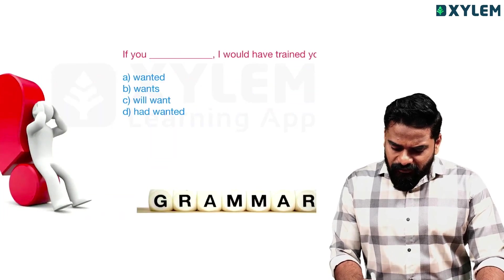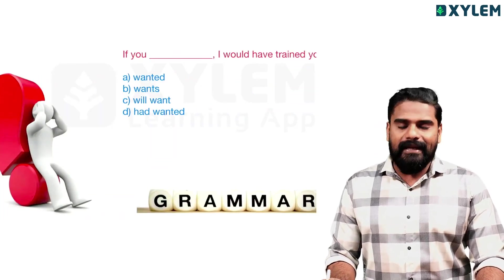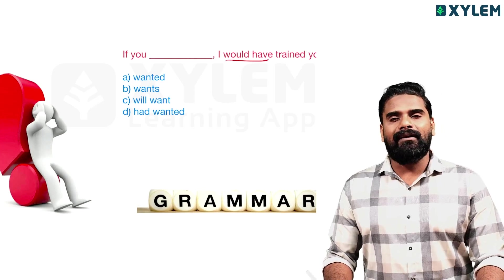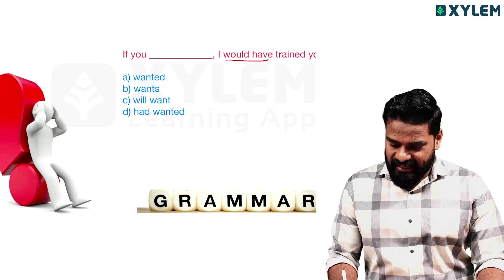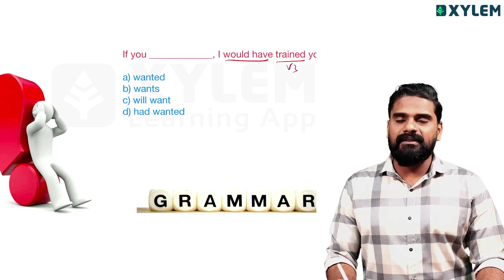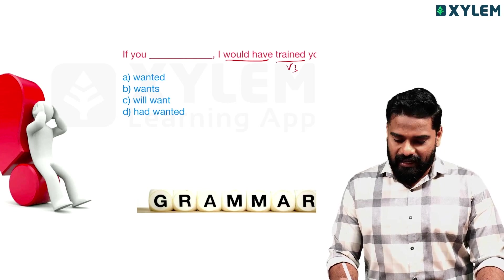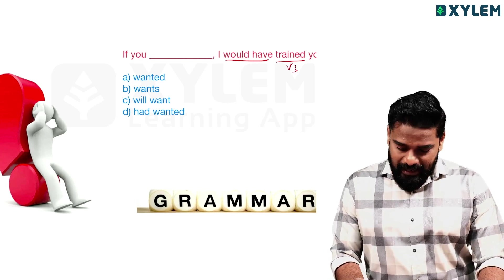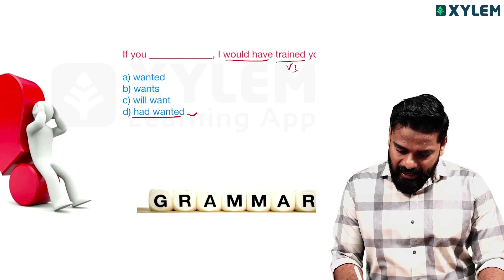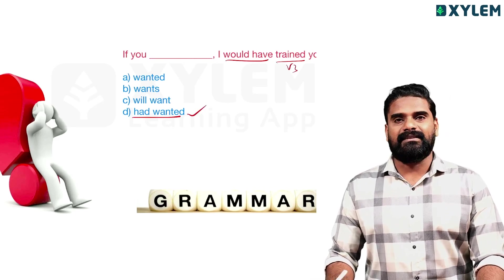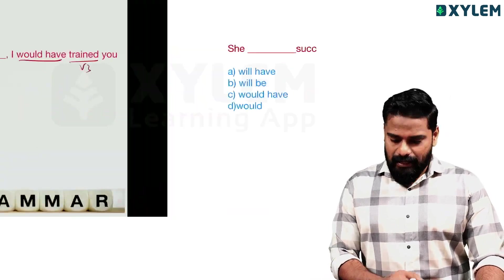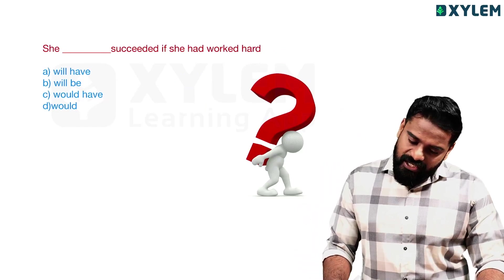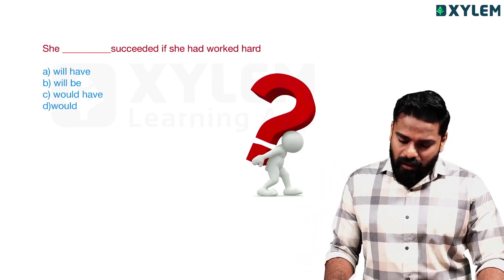Next question: 'If you dash, I would have trained you.' The clue 'would have' tells us this is the third condition — past perfect in the if clause. Answer: 'If you had been there, we would have trained you.' Had worked hard — past perfect.